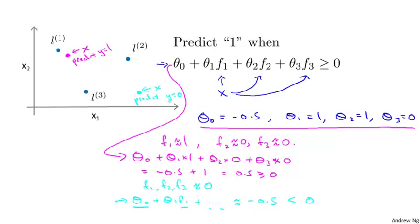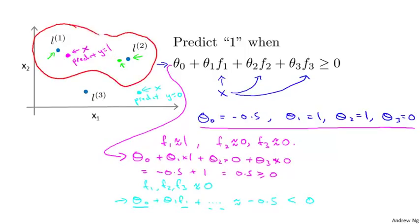If you do this for a range of different points, you should convince yourself that for training examples close to l two, we also predict y equals one. What you find is that for points near l one and l two, we predict positive, and for points far away from both landmarks, we predict the class is zero. So the decision boundary of this hypothesis ends up looking something like this, where inside the red decision boundary we predict y equals one and outside we predict y equals zero.